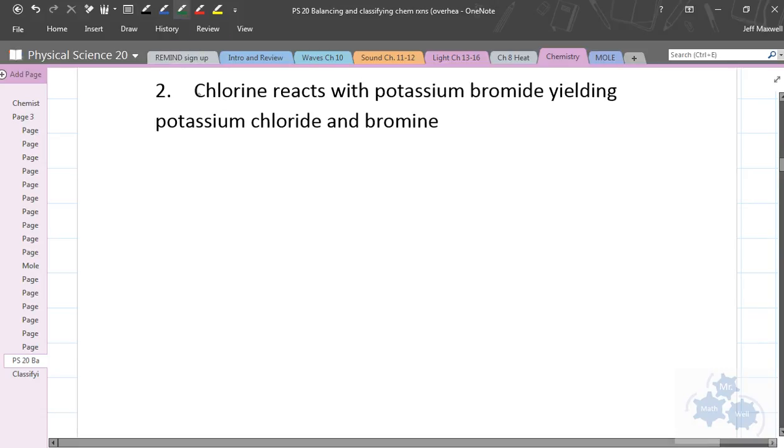And it's question number two. We have chlorine reacts with potassium bromide, yielding potassium chloride and bromine. So, if you read that one more time, you can kind of see that we have chlorine reacts with potassium bromide. So, we have two reactants.